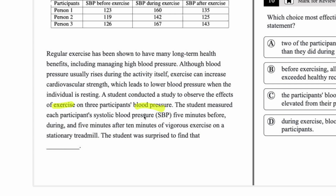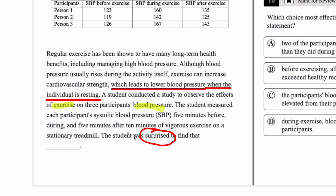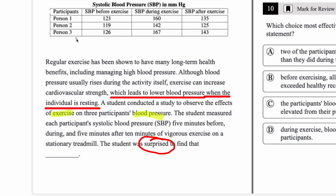The student measured each participant's systolic blood pressure five minutes before, during, and after 10 minutes of vigorous exercise on a stationary treadmill. The student was surprised to find that blank. This is important — if they're surprised, the findings go against expectations. The expectation from the passage is lower blood pressure when resting after exercise. So if the student were not surprised, we'd look for blood pressure lower after exercise than before. But given the surprise, we want to see if any participants actually had higher blood pressure after exercise than before.